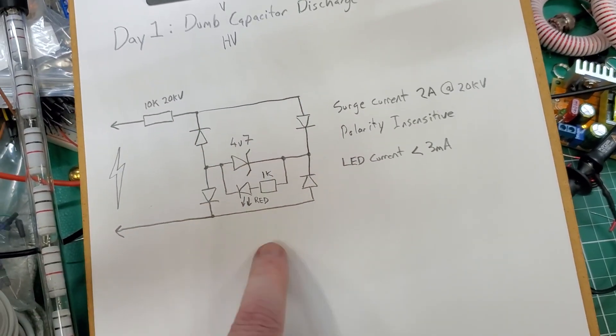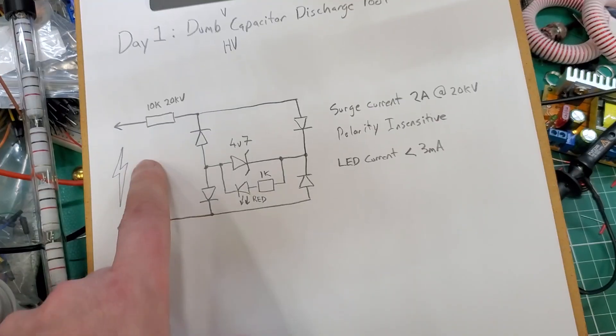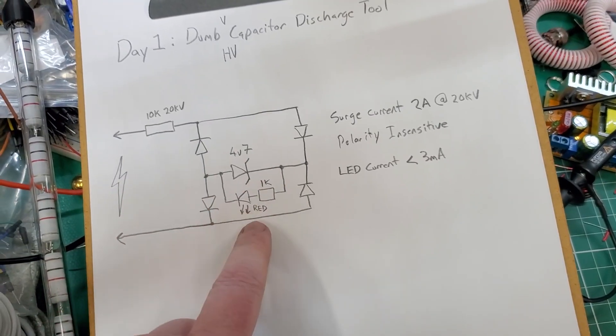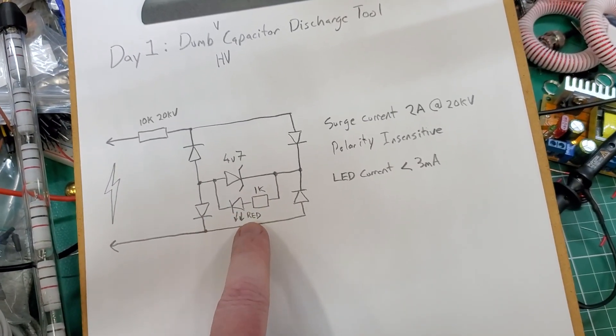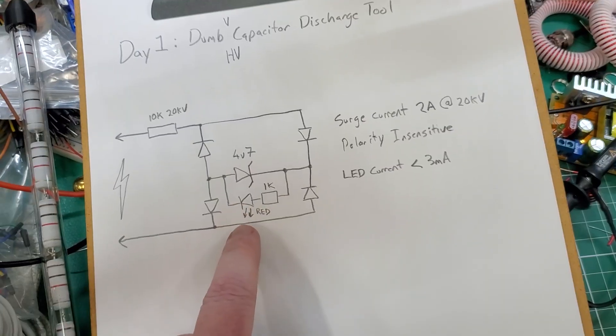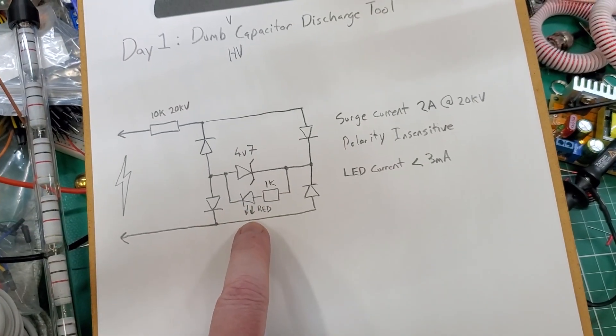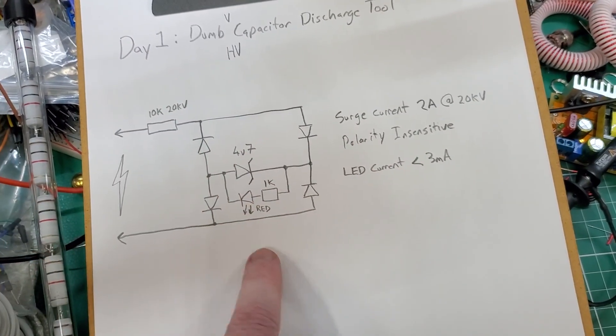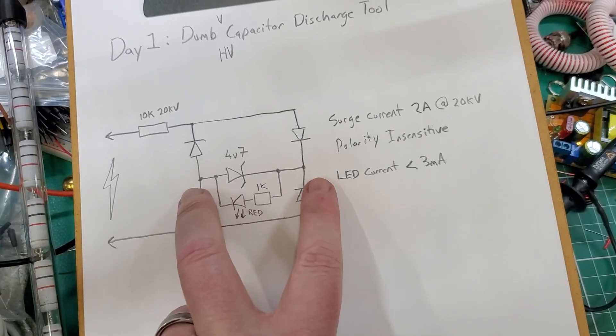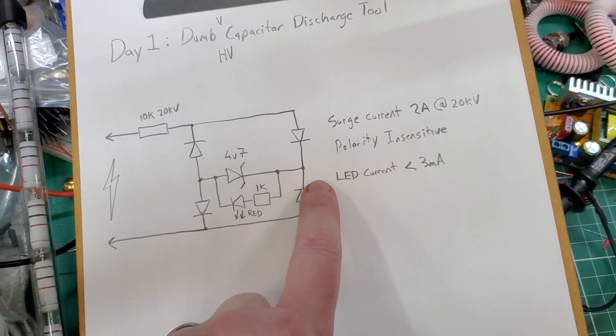Then we've got a bridge to make it polarity insensitive. So no matter which way you connect it, the device which glows an LED in this case is a polarity sensitive device. So we have the bridge to make sure that the voltage across here is always going to be positive here.